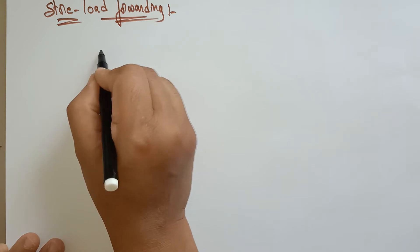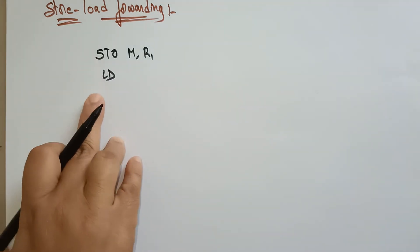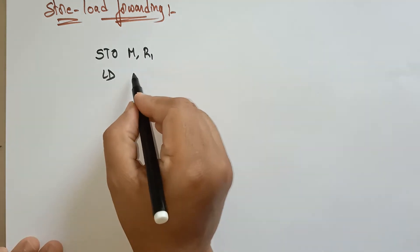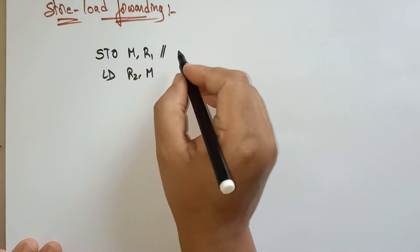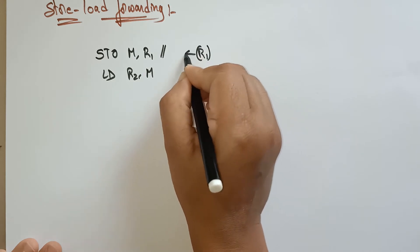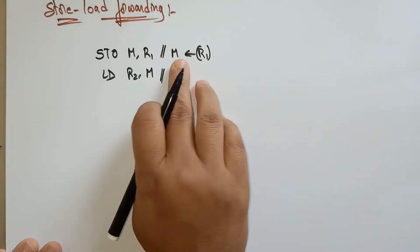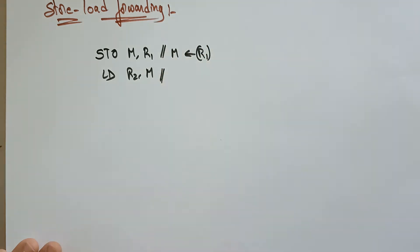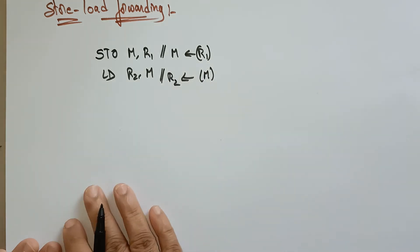Let's take two instructions consisting of only store and load operations. The first instruction is: store memory, r1. The second instruction is: load r2, memory. What these are doing: the content of r1 is being stored into memory, and then load means whatever data is present in memory is being moved to the r2 register.